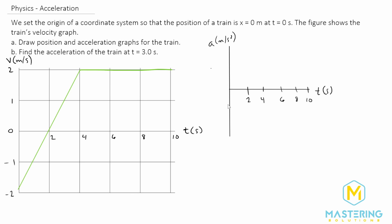I've drawn our acceleration versus time graph here, now we just need to fill it in. Whenever we have a velocity versus time graph, to get the acceleration from that we find the slope — that's the change in rise over run. The rise in this case is meters per second, the run is seconds, so meters per second divided by seconds gives meters per second squared. There are two distinct sections. The second section is a flat line, meaning there is no slope — the velocity is staying the exact same, so the acceleration will be zero. From four to ten the acceleration is zero.